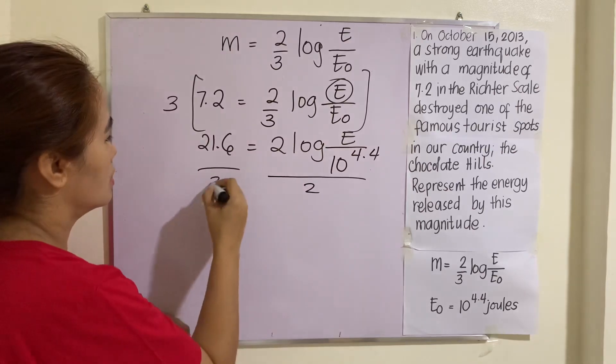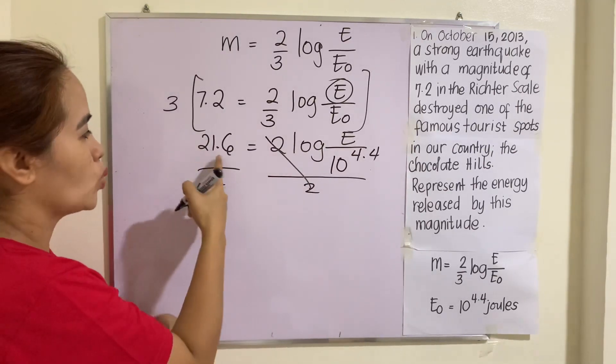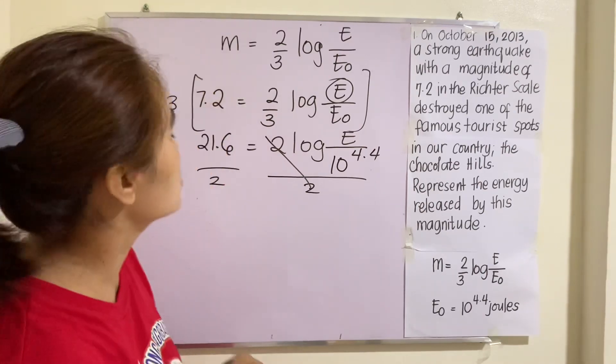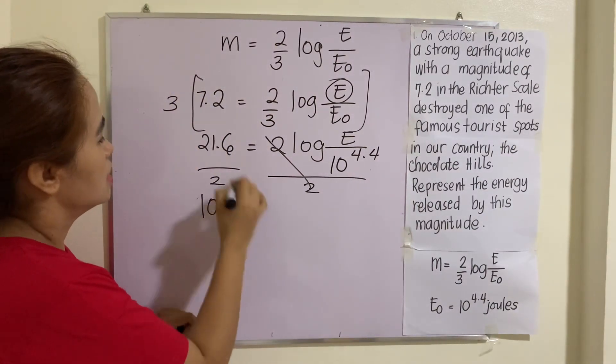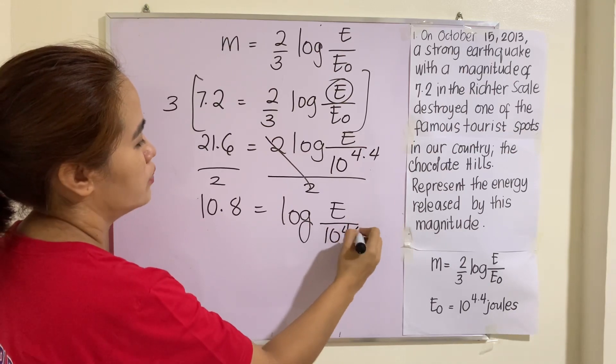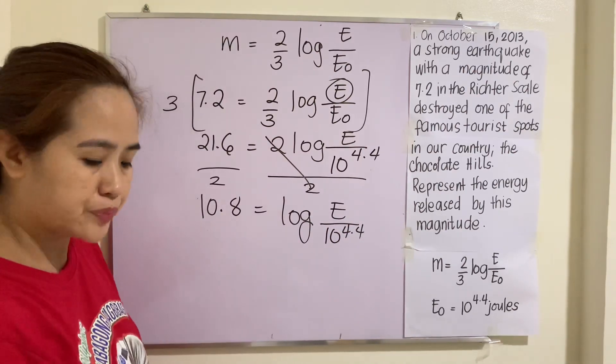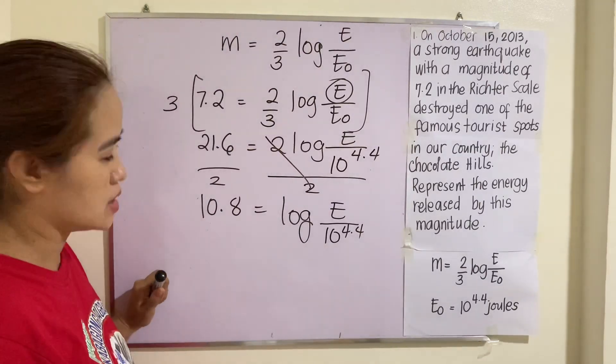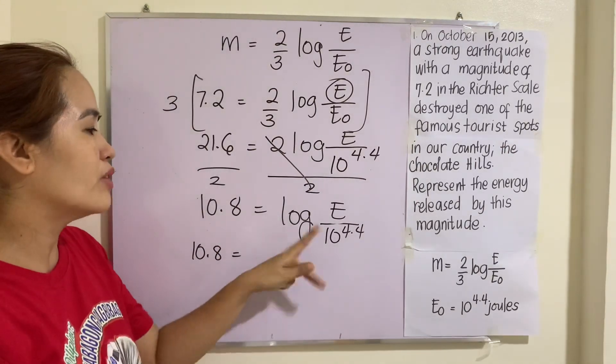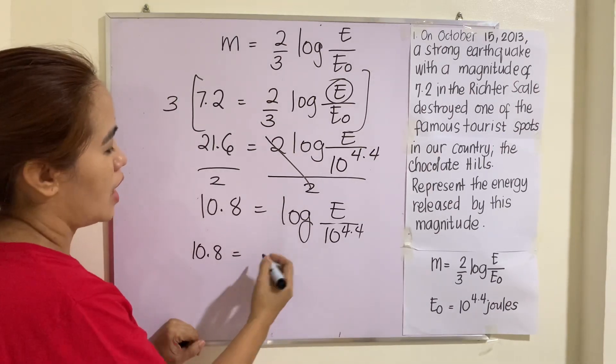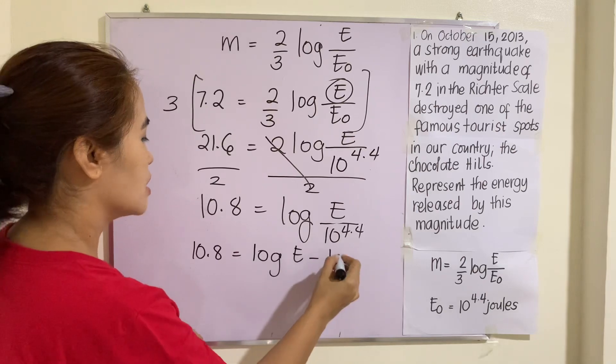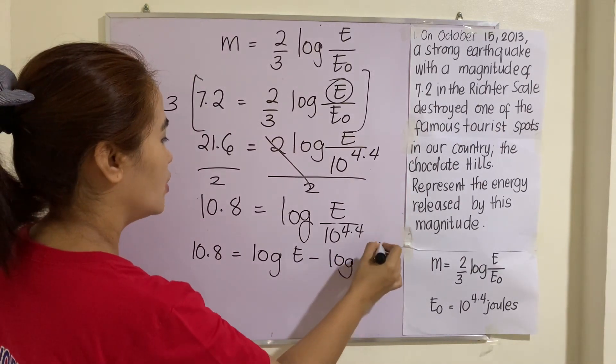You divide everything by 2 first. That will be cancelled. So that will be 21.6 divided by 2 is equivalent to 10.8. Is equal to log(E/10^4.4). Now, how are we going to solve this E here? Remember that one of the laws of logarithms states that if you have a quotient, you can get the difference of the two. Since they have both an imaginary base of 10, that will be log E - log(10^4.4).